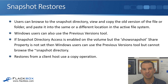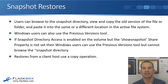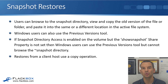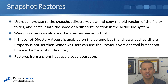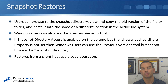Another scenario — perhaps with users working on a shared file — is where user two has overwritten some changes that user one made, and user one wants those changes back without overwriting user two's changes. In that case, the user can browse to the snapshot directory, copy the old version to a different location, giving you two different versions, and the users can sort it out and make edits that keep all of their changes from both users.